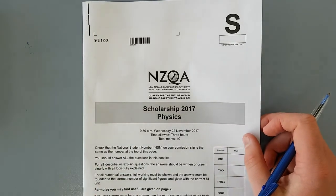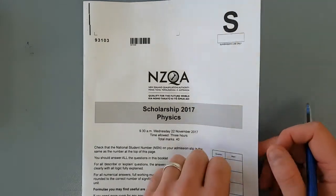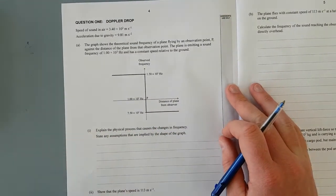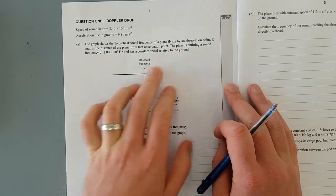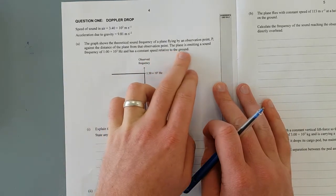In this video, I'll be working through the 2017 Scholarship Physics exam. Question 1. The graph shows the theoretical sound frequency of a plane flying by an observation point P against the distance of the plane from that observation point.